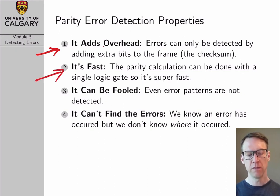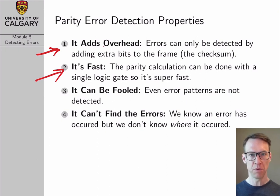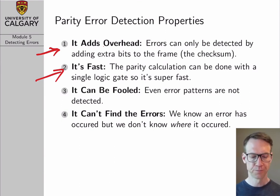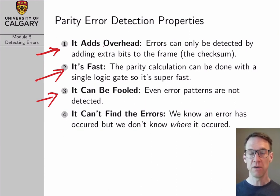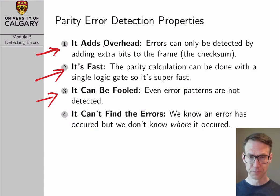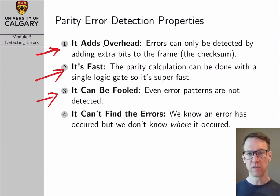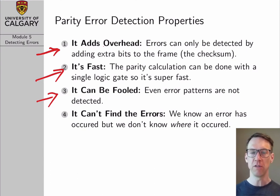The second property of the parity bit scheme is that it is super fast. Basically, it's just a big exclusive-OR gate, and anything that can be implemented using combinational logic at the fundamental gate level can be built into a specialized ASIC or integrated circuit and will go super fast. So the parity bit will go as fast as we need it to go. However, it can be fooled. We saw in our example that an even number of errors will fool the parity bit check scheme, and we will not be able to detect an even number of errors — two errors, four errors, six errors, and so on.